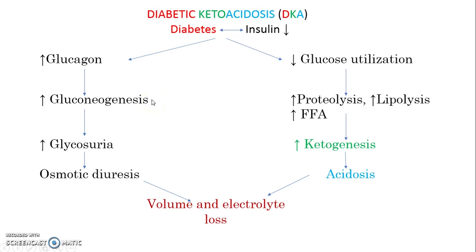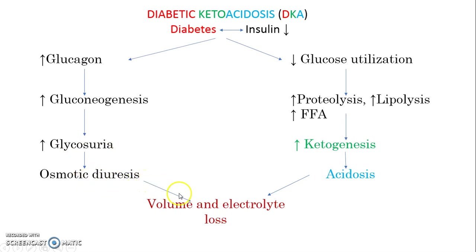Also, because of the decreased insulin release, there is more glucose in the body. This causes glycosuria — increased excretion of glucose in the urine. And this causes osmotic diuresis, which then leads to volume and electrolyte depletion, meaning there is loss of fluid along with electrolytes.